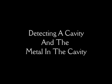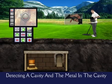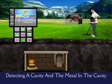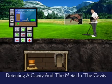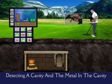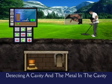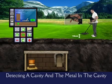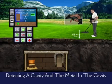The most important feature that separates Golden King from other systems is its ability to detect cavities in the field as well as metals.